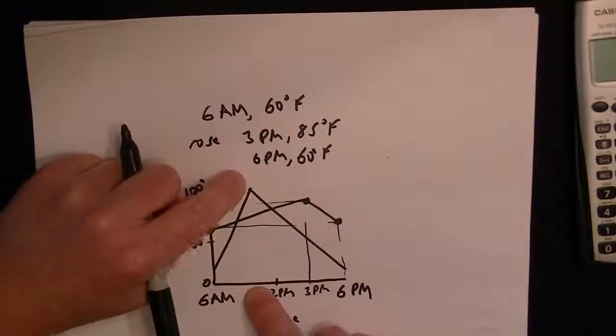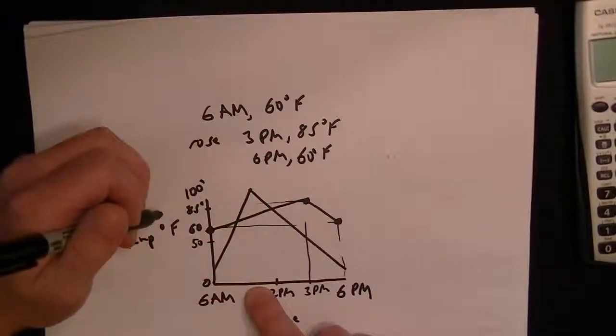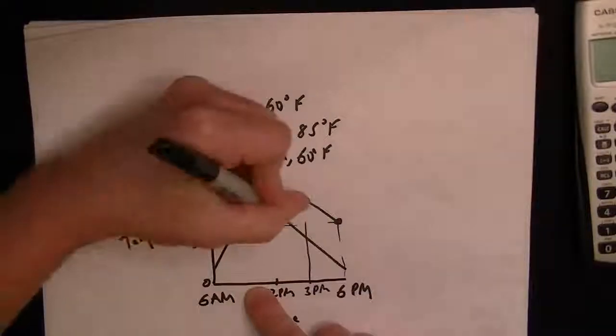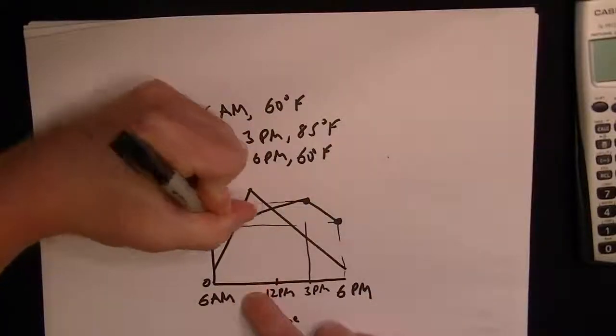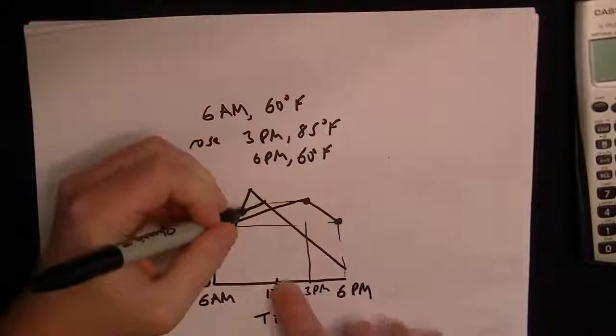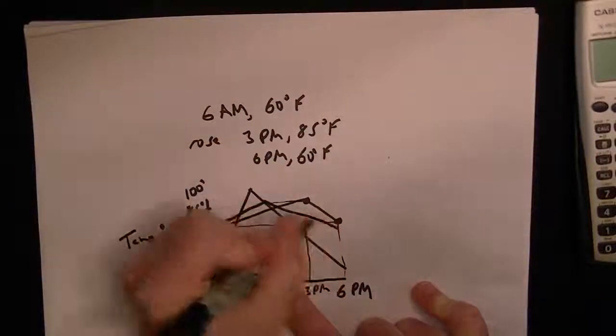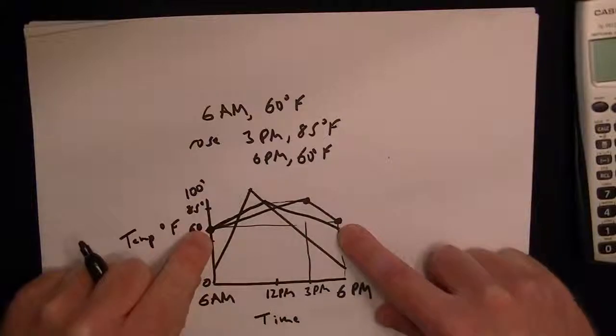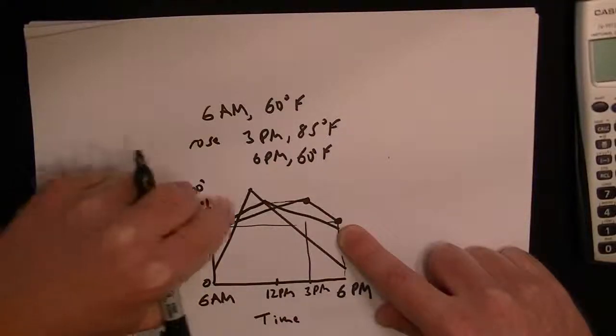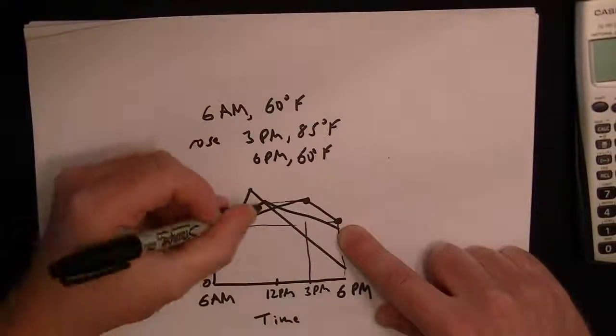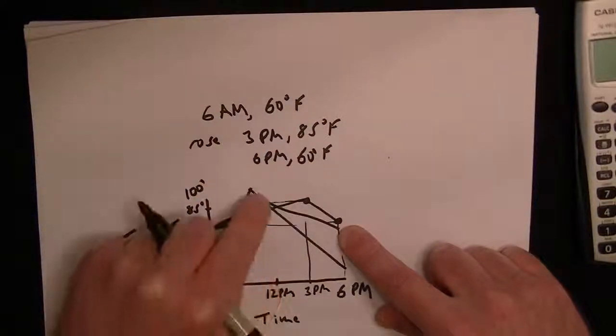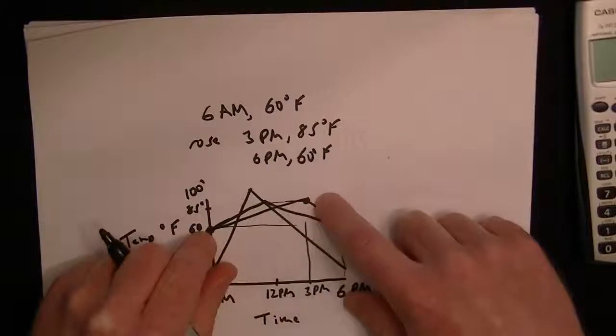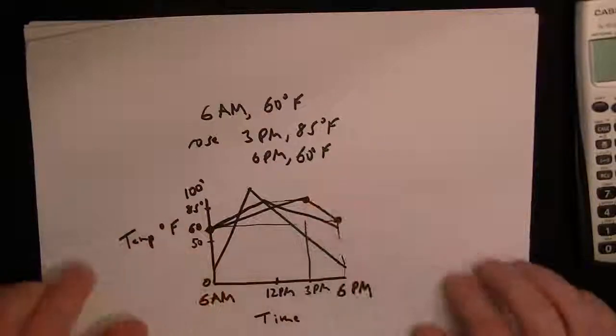So you can tell which graphs work and which ones don't. And you could have another graph that peaks at 12 PM and then it goes down. So the starting point and the ending point are right and this temperature of 85 is right, but the problem is that the time when it reaches 85 is 12 PM and it should be 3 PM. So the point should be shifted over to where 3 PM is.